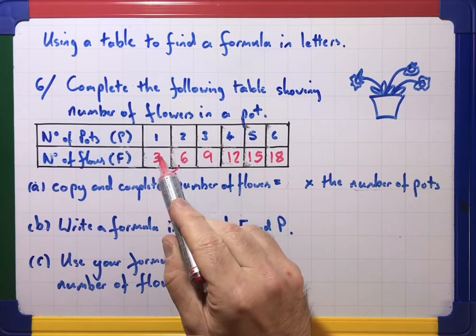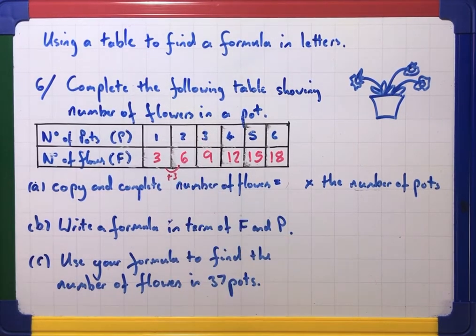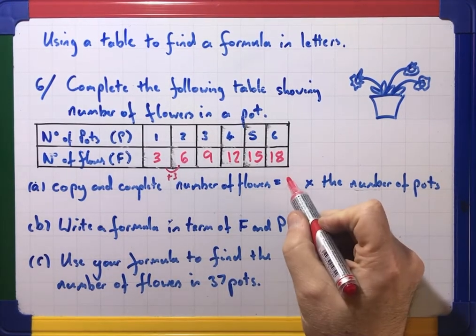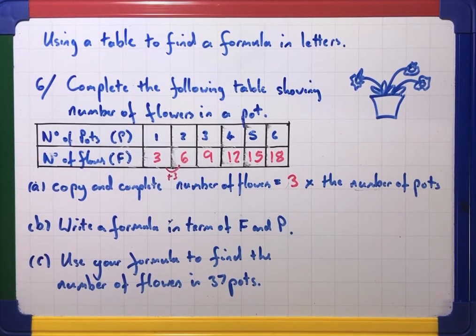Because look, three times one is three, three times two is six, three times three is nine and so on. So the number of flowers is equal to three times the number of pots.